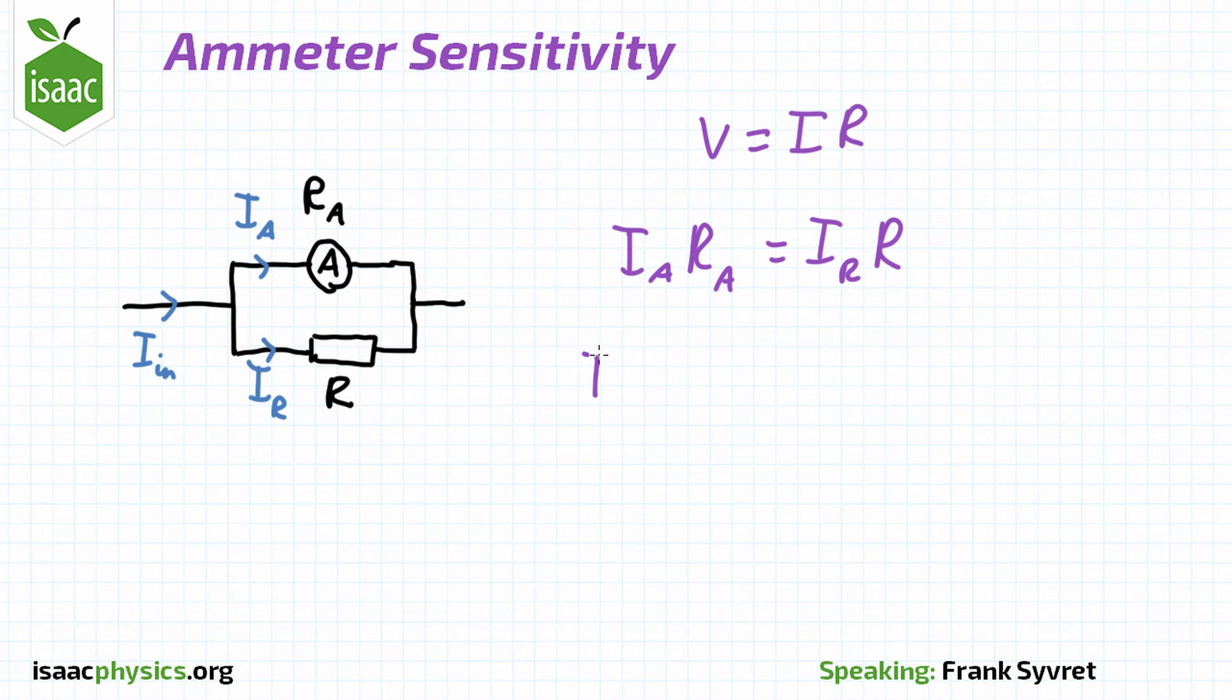We also know from Kirchhoff's current law that IIN equals IA plus IR. We now have enough information to find an expression for R in terms of IA, RA, and IIN.